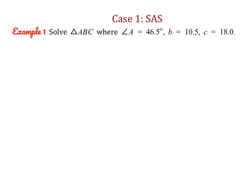One scenario where we can use the law of cosines is when we have two sides and the included angle. Let's sketch a picture of what we're given in triangle ABC. Remember, the picture is not drawn to scale — it's just to give us an idea of the relative position of our information. So A is 46.5 degrees, side B is 10.5, and side C is 18.0.